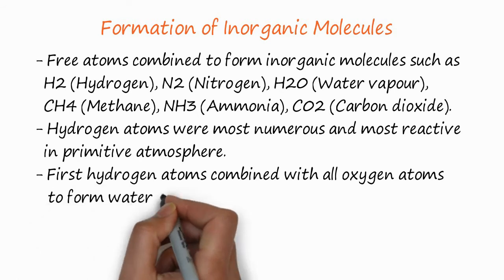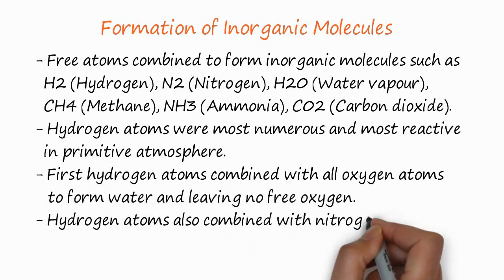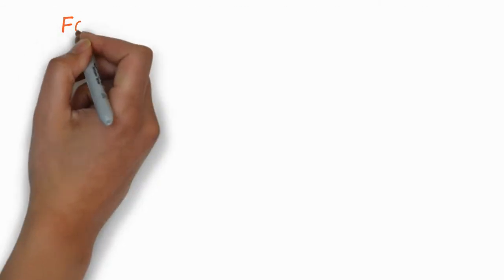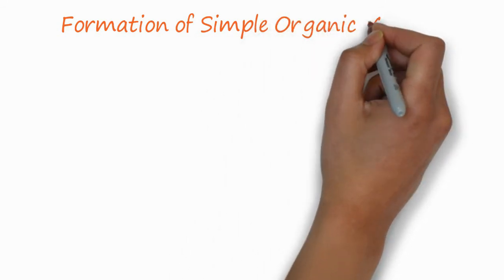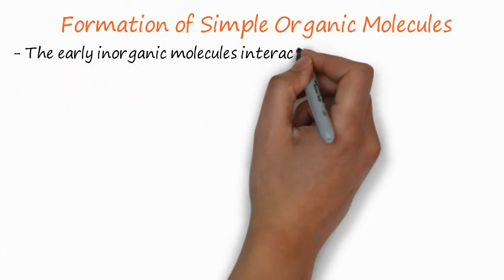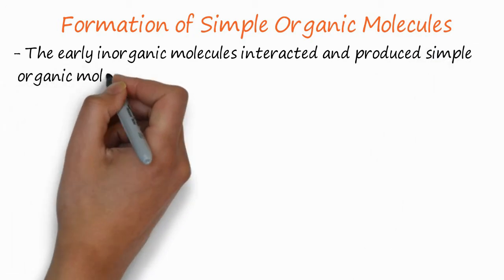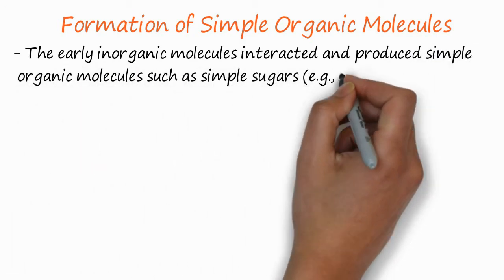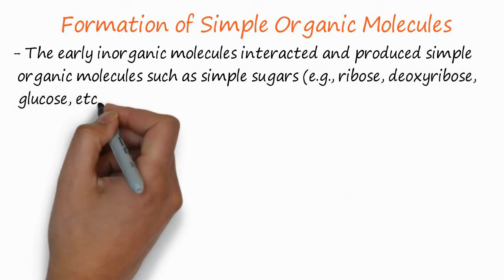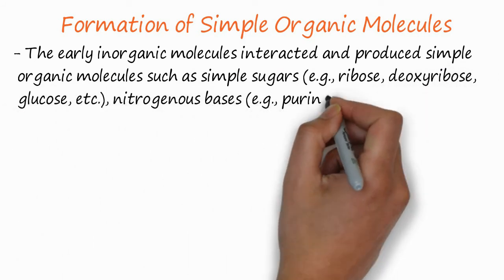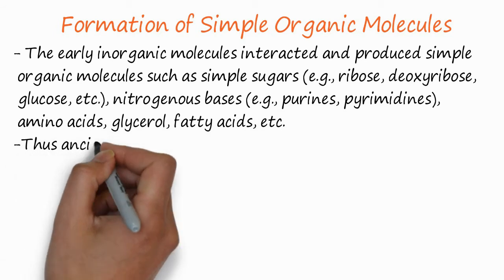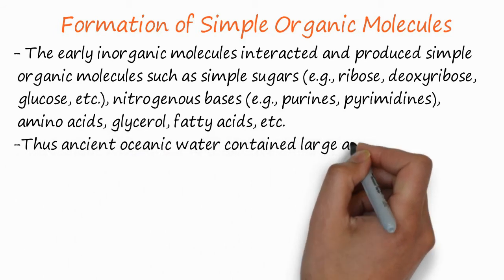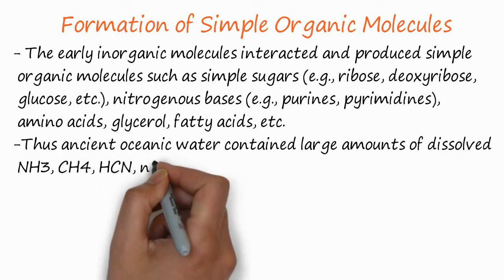Carbon dioxide and hydrogen atoms were most numerous and most reactive in the primitive atmosphere. First, hydrogen atoms combined with all oxygen atoms to form water. Then hydrogen atoms combined to form ammonia. Then, simple organic molecules formed. Early inorganic molecules interacted and produced simple organic molecules such as simple sugars — ribose, glucose, etc. — nitrogen species including purines, pyrimidines, amino acids, glycerol, and fatty acids. Thus, the ancient ocean water contained large amounts of dissolved ammonia, methane, hydrogen cyanide, nitrides, carbides, and various gases.